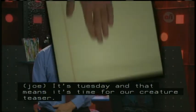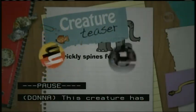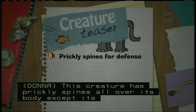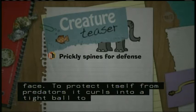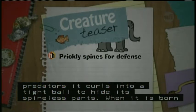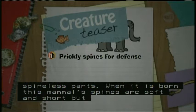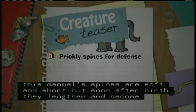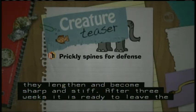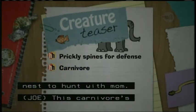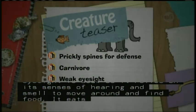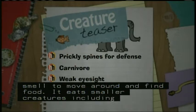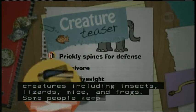Okay, it's Tuesday, and that means it's time for our creature teaser. This creature has prickly spines all over its body except its belly, legs, and face. To protect itself from predators, it curls into a tight ball to hide its spineless parts. When it is born, this mammal's spines are soft and short, but soon after birth they lengthen and become sharp and stiff. After three weeks, it is ready to leave the nest to hunt with mom. Now this carnivore's eyesight is weak, so it relies on its senses of hearing and smell to move around and find food. It eats smaller creatures including insects, lizards, mice, and frogs. And some people keep these mammals as pets and use them to prey on common garden pests.